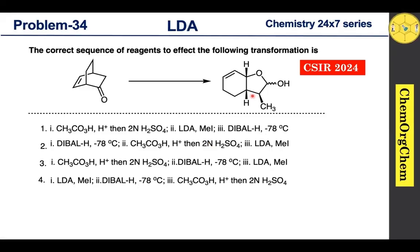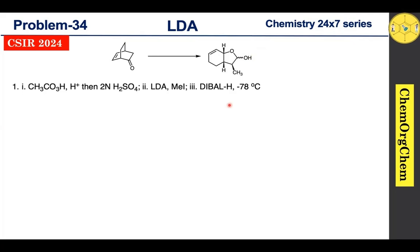Today we are going to tackle a question from CSIR 2024. According to this question, we need to find out the correct sequence of reagents for the transformation of this substrate into the corresponding product. There are four options — let's find out together which one is correct.